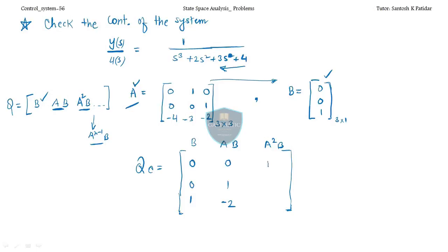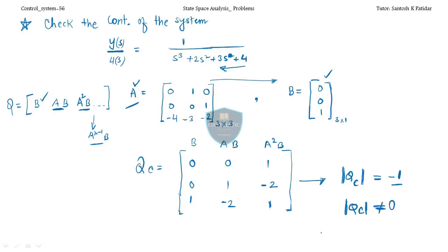Now find the determinant of this Qc matrix. The determinant comes out to −1, which is not equal to zero. Therefore the rank of Qc equals the rank of A, and the system is 100% controllable. This type of question gives you two marks in the GATE examination.